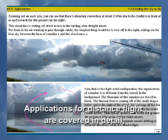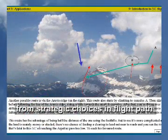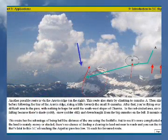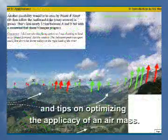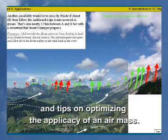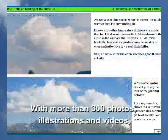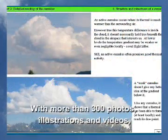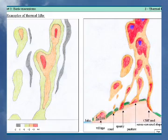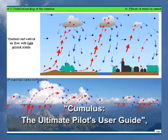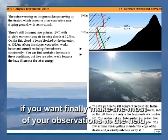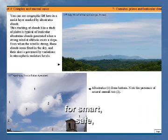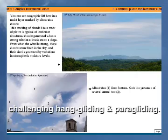Applications for distance flight are covered in detail, from strategic choices in flight path and ways to increase safety, all the way up to tips on optimizing the efficacy of an air mass. With more than 300 photos, illustrations, and videos, Cumulus, the ultimate pilot's user guide, is an indispensable document if you want to finally make the most of your observations in the field for smart, safe, challenging hang gliding.